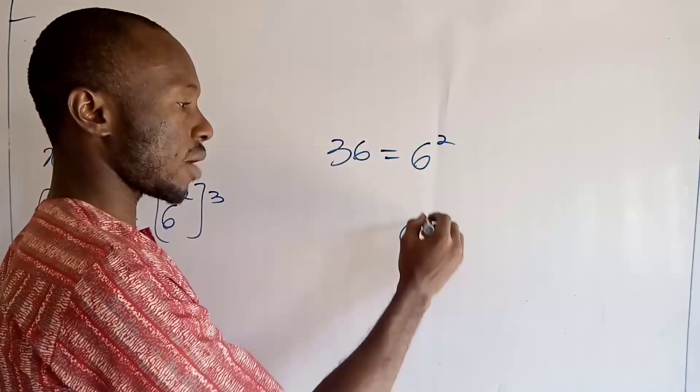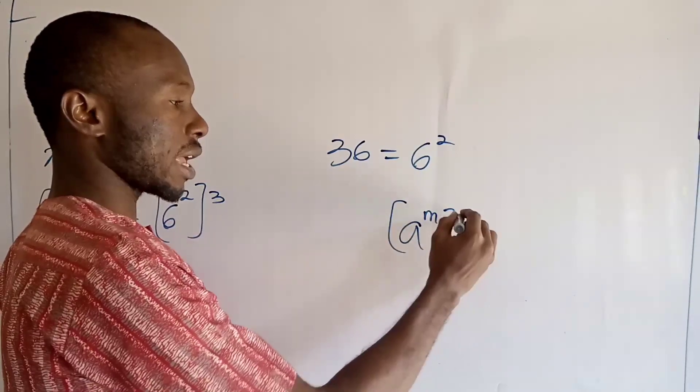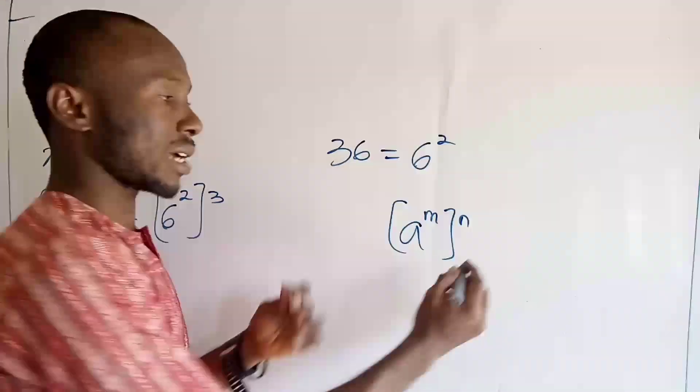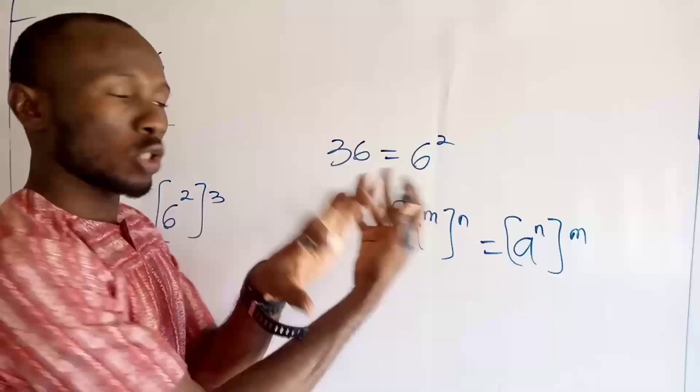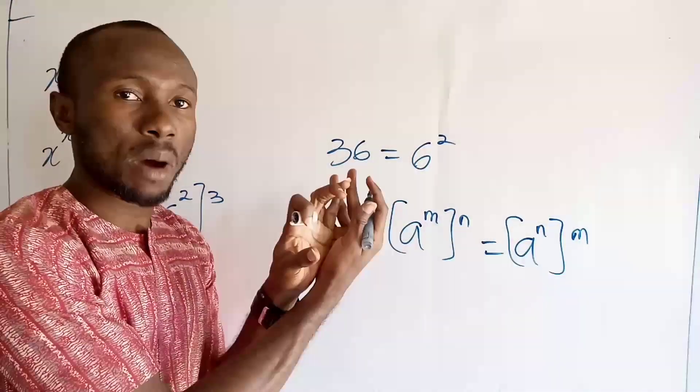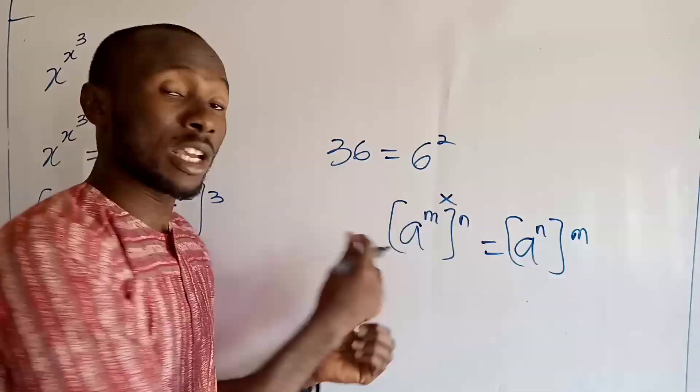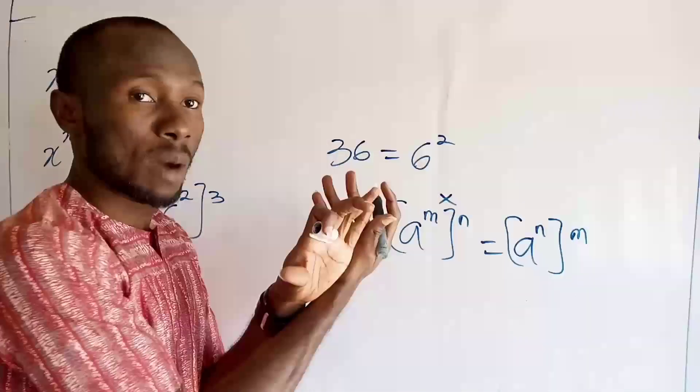It says if I have a^m all to the power n, I can write this as a^n all to the power m. As if to say you're swapping the position of the powers because multiplication is commutative. So you can actually swap the powers.